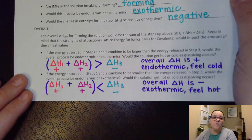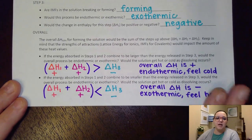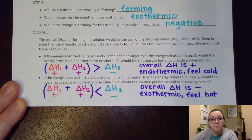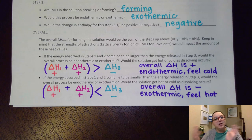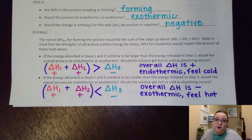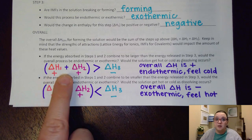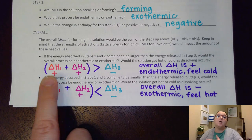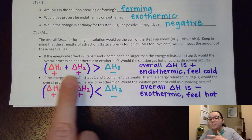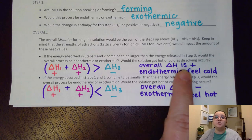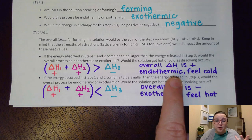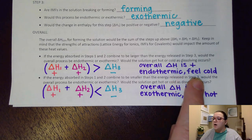The overall delta H for forming a solution would be the sum of those three steps — the two positive breaking-forces steps along with the one negative forming-forces step. Depending on which is bigger will determine if our overall dissolving process is endothermic or exothermic. If the original two delta H's for breaking the forces are significantly higher than the energy released when I form the forces in the solution, then overall my delta H is positive, meaning it's endothermic, and if I felt my container it would feel cold.